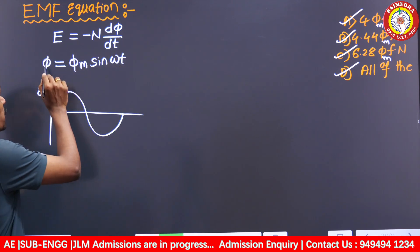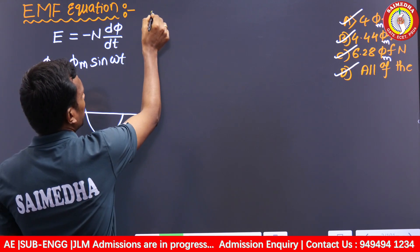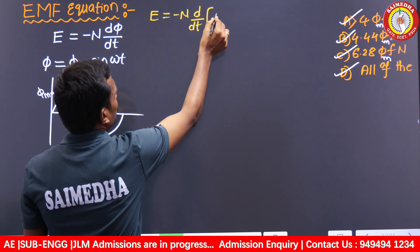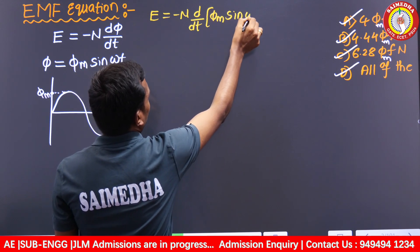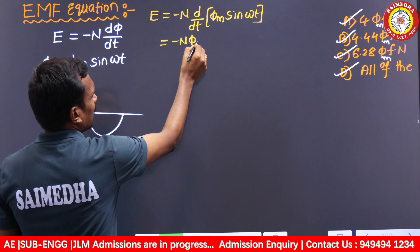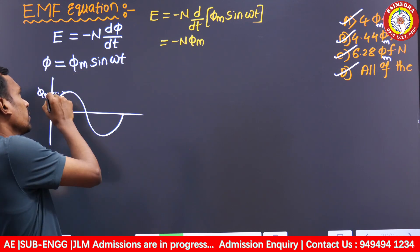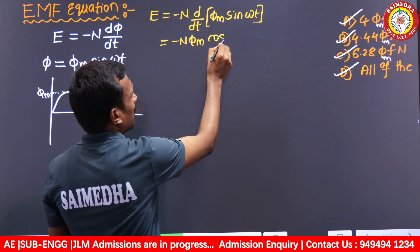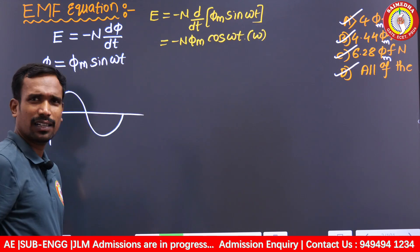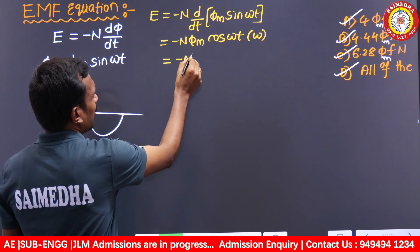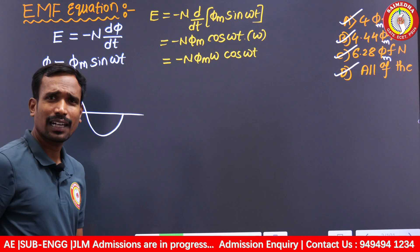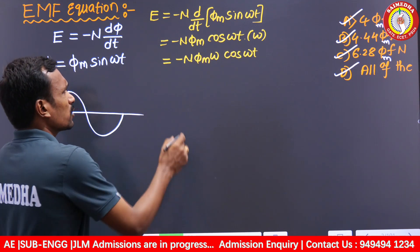Substituting Φ = Φ_M × sin(ωt) into E = −N dΦ/dt: since Φ_M is a constant, differentiating sin(ωt) gives cos(ωt), and differentiating ωt gives ω. So the result is: E = −N × Φ_M × ω × cos(ωt).